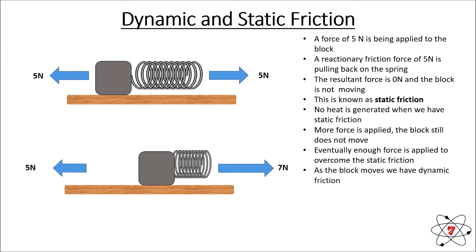As the block moves we have dynamic friction. Dynamic friction occurs when two objects are sliding past each other, and it occurs whenever the force acting in one direction is greater than the force acting in the other. The resultant force in this case is two newtons to the right. Dynamic friction is generally smaller than static friction.